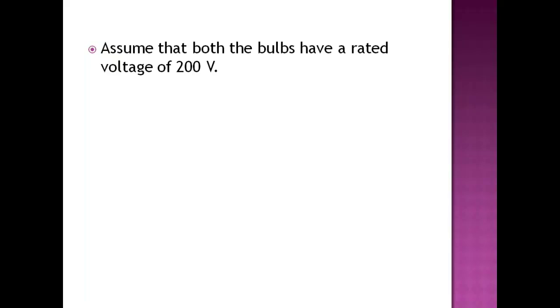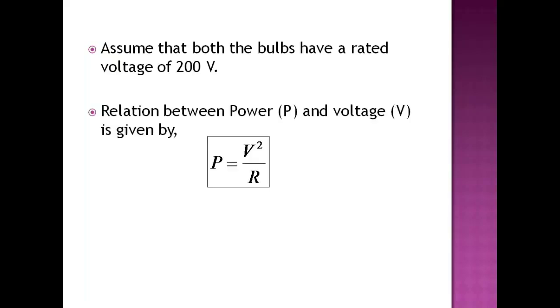Now assume that both the bulbs have a rated voltage of 200 volts. Relation between power and voltage is given by P is equal to V square by R, where P is the power rating of the bulb, V is the voltage rating of the bulb and R is the resistance of the bulb.